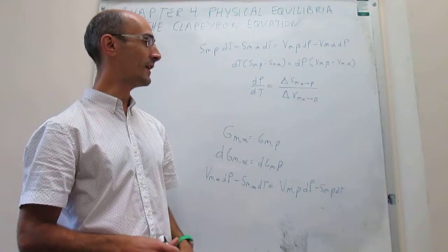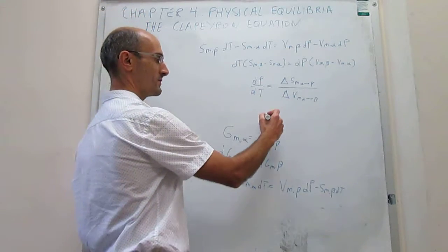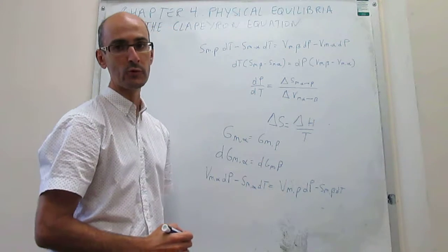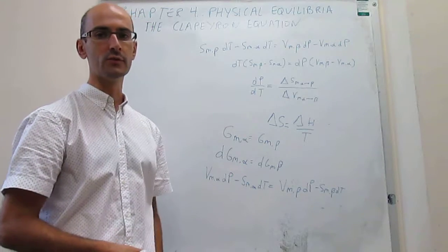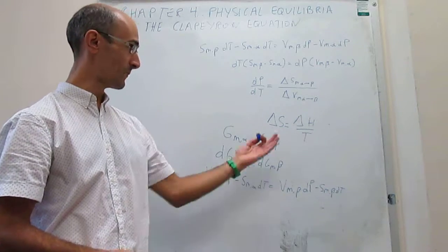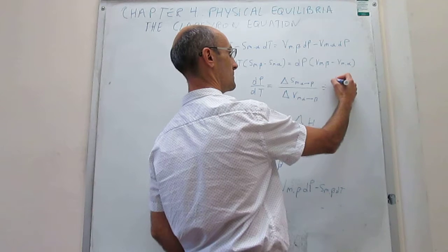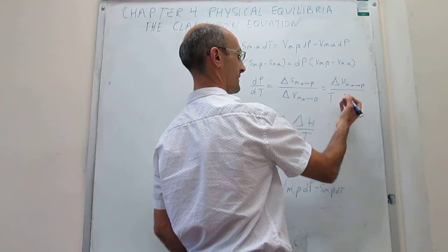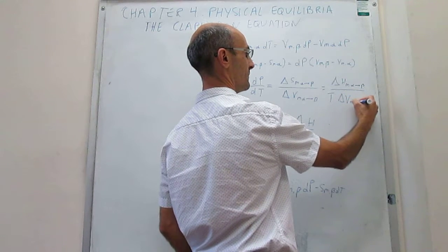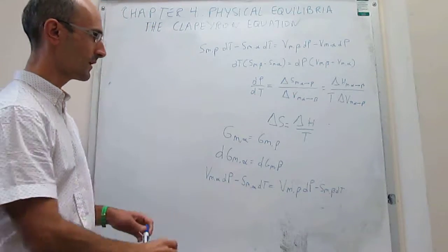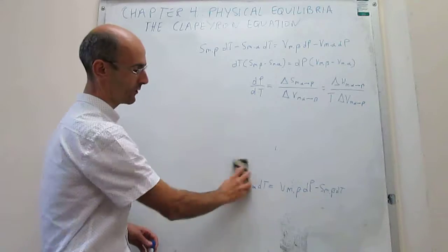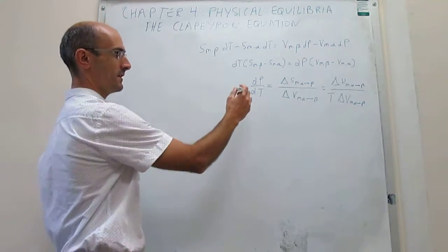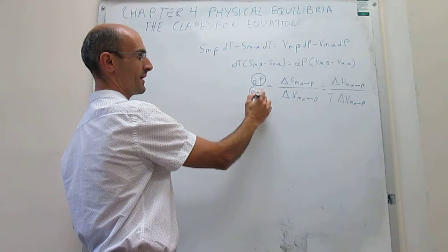This is something that we know how to calculate. For a phase transition, the change in entropy can be calculated simply as the change in the enthalpy of the phase transition over the temperature at which that phase transition is taking place. This is something we use when calculating changes in entropy for the system in phase transitions. Applying that here, dP/dT equals the change in molar enthalpy from alpha to beta divided by the temperature of that phase transition multiplied by the change in molar volume from alpha to beta. That's what we actually call the Clapeyron equation, which you may be seeing in other courses like general chemistry.